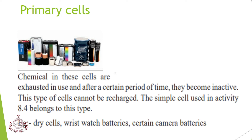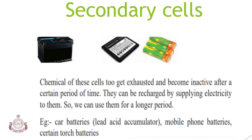Primary cells cannot be recharged. The simple cell used in activity 8.4 in your book also belongs to this type, along with dry cells, wristwatch batteries, and certain camera batteries. In secondary cells, the chemicals also get exhausted and become inactive after a certain period of time, but they can be recharged by supplying electricity to them, so we can use them for a longer period.